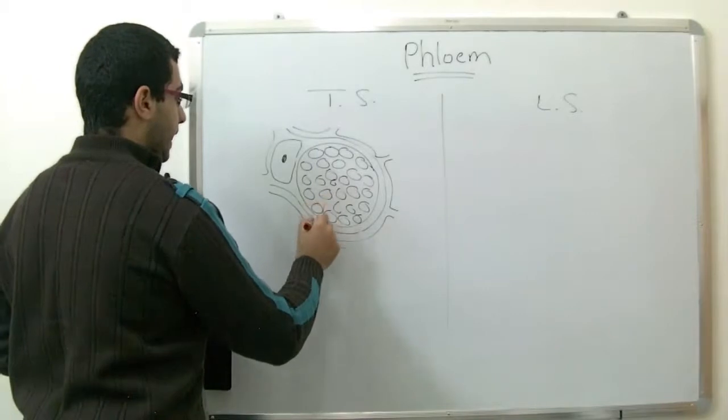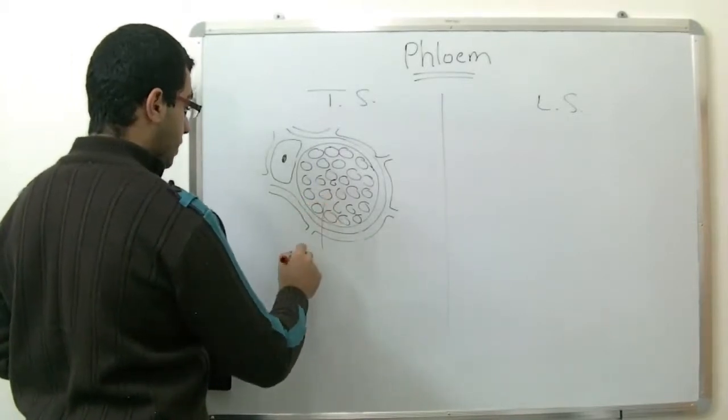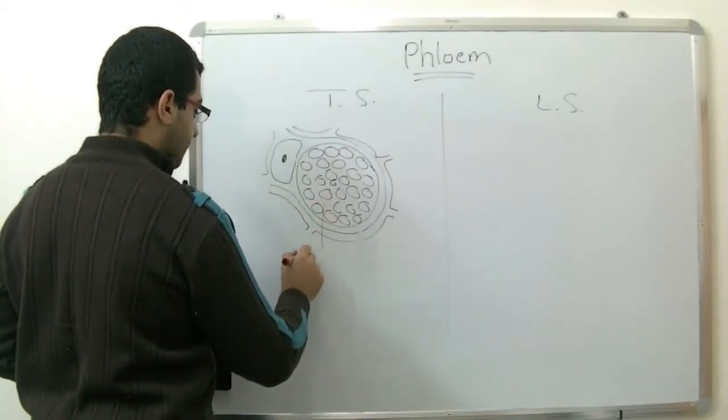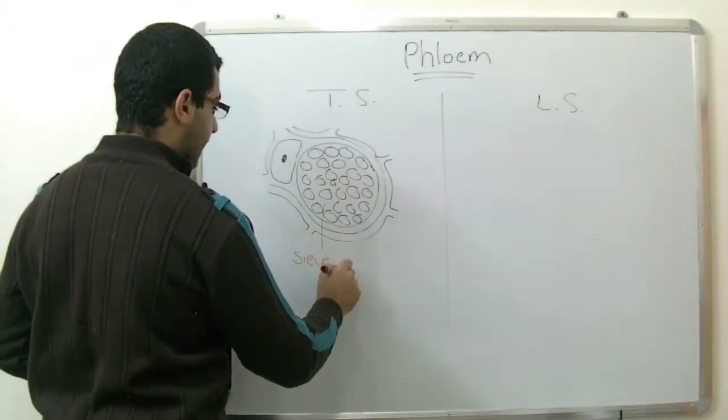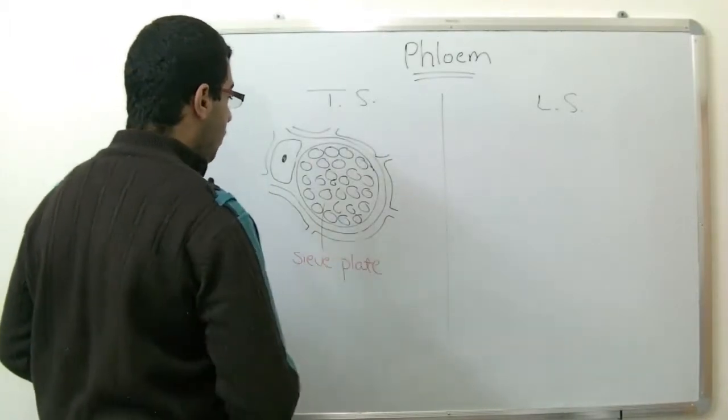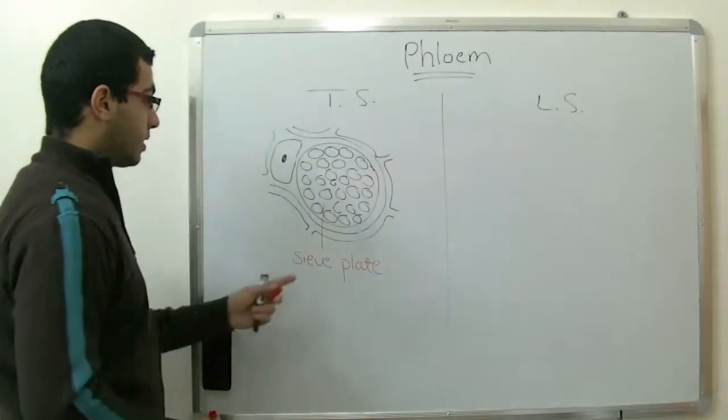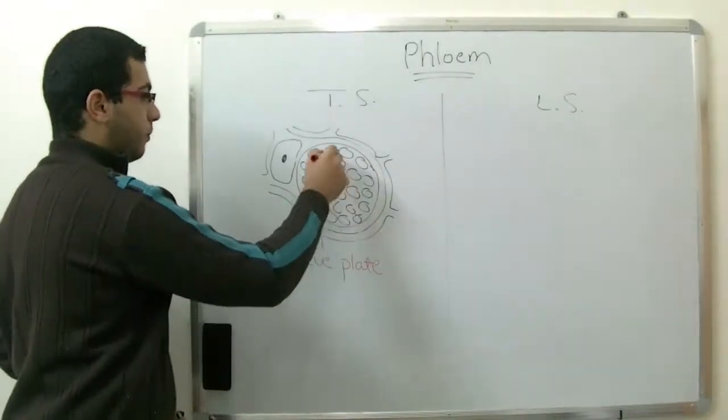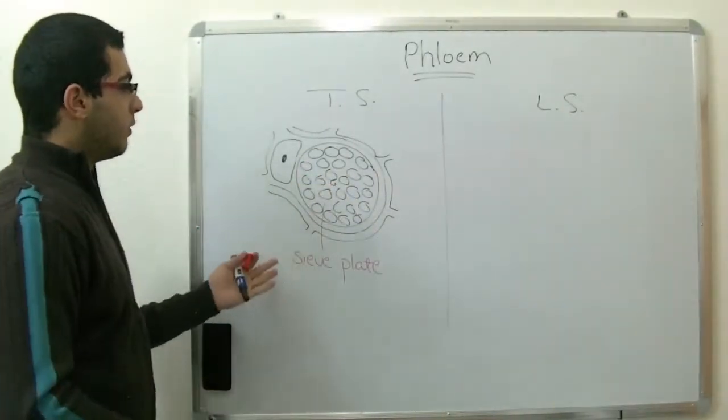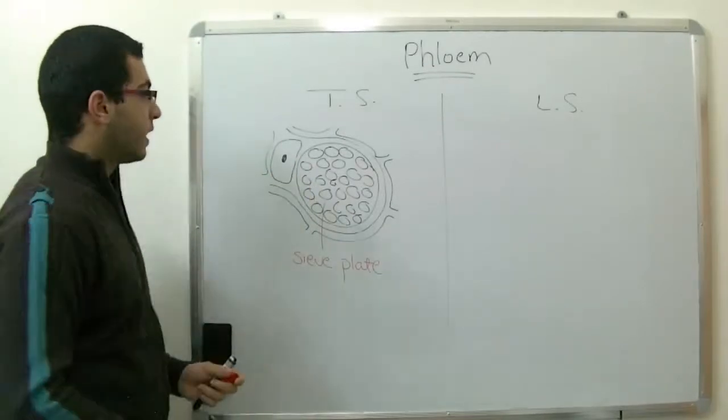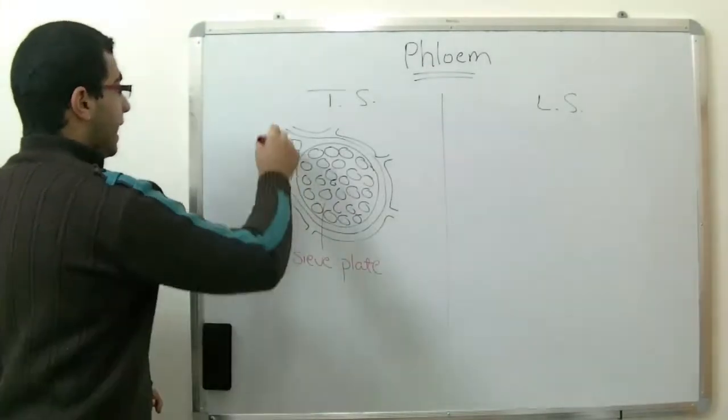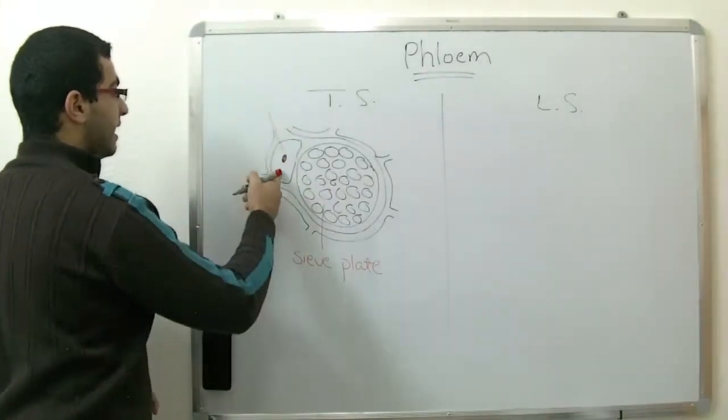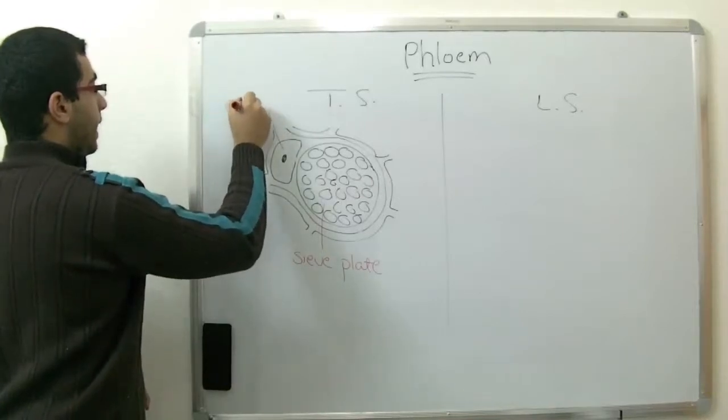This plate here, this layer, is called a sieve plate, or a sieve tube. It's called a sieve tube because it's full of pores which allow the food substances to move through. These cells are the phloem, and this cell is called a companion cell.